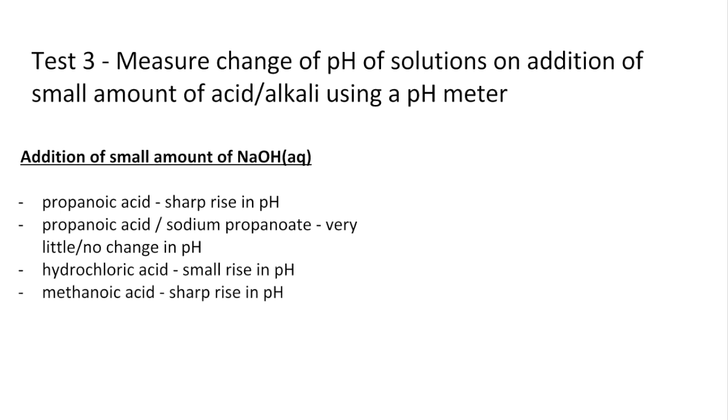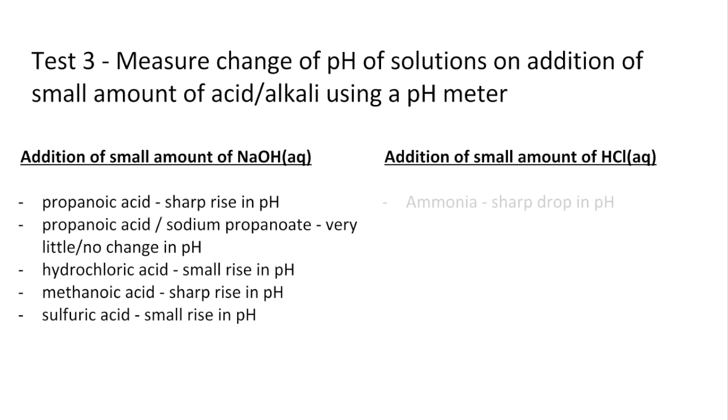Methanoic acid, weak acid, so sharp rise in pH. And sulfuric acid, again strong acid, so small rise in pH. And then we do the opposite to the two alkaline substances, so adding a small amount of HCl. The ammonia is a weak base so it will be affected quite markedly by the addition of acid, so you'd see a sharp drop in pH. Whereas the potassium hydroxide, strong alkali, so just a small drop in pH.